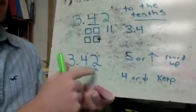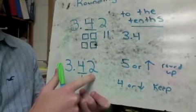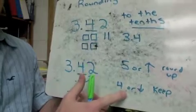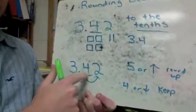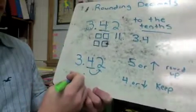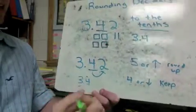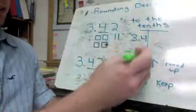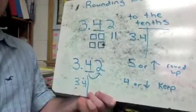In this case, I've got 2 hundredths. 2 is in the 4-or-below column, so that means I'm going to keep this number exactly the same. My answer is 3 and 4 tenths. I cut off everything after the tenths place — whatever I round to, that's where I stop.